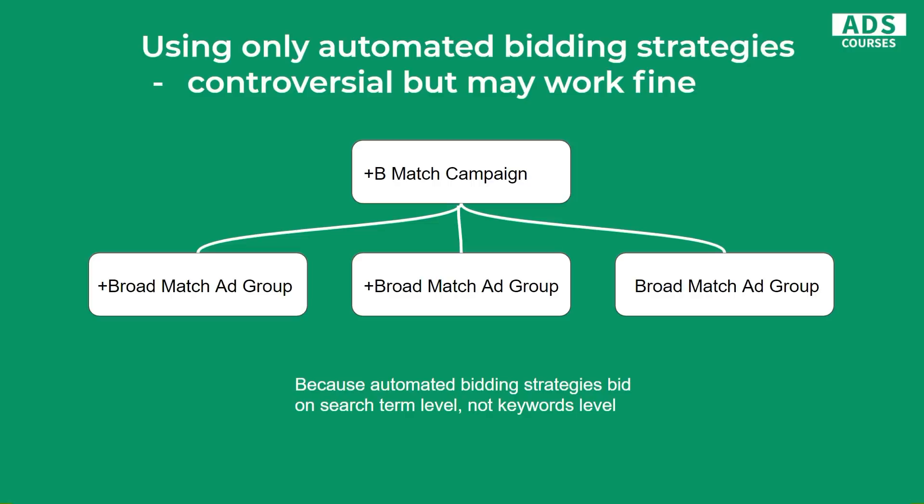Of course, you should focus on adding negatives into your campaigns. This structure works well when you follow the best automated bidding strategy guidelines. You can watch my other video about this on my channel.